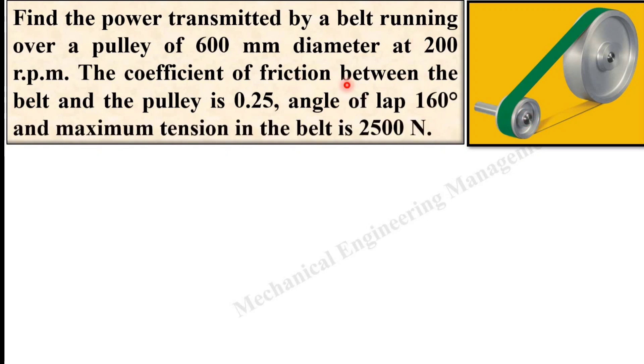The coefficient of friction between the belt and the pulley is 0.25. Angle of lap is 160 degrees, that is sometimes known as contact angle also, and maximum tension in the belt is 2500 Newton.